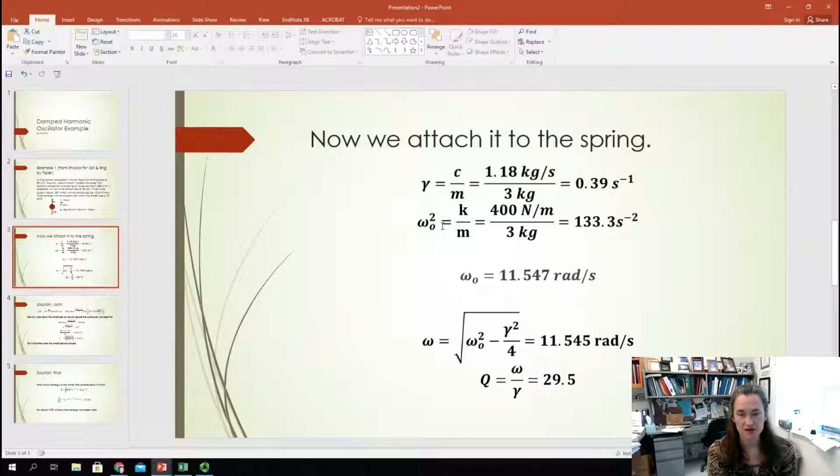Now, the natural frequency of oscillation when you attach this sphere to a spring would be equal to the spring constant divided by the mass, right, square root of that. So, omega_naught squared is equal to k over m, and then omega_naught, of course, is the square root of k over m.